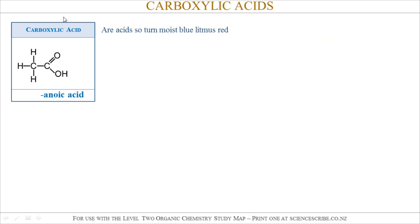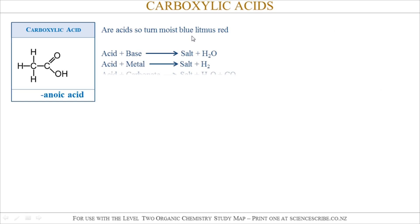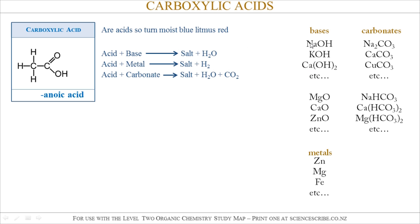Some properties of carboxylic acids: they're acids, so they'll turn moist blue litmus paper red. Some reactions of carboxylic acids are just like standard acid reactions — acid and base to make salt and water, acid and metal for salt and hydrogen gas, and acid and carbonate for salt, water, and carbon dioxide.